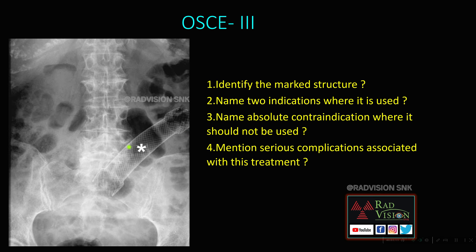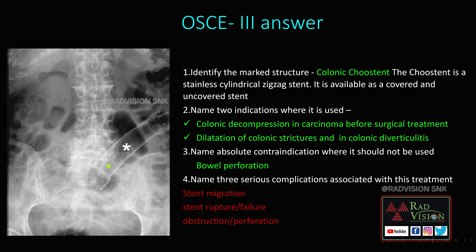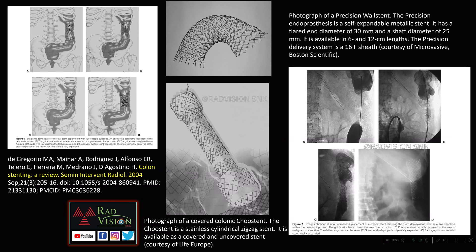The next case shows a marked structure — this is a colonic Chew stent, a stainless steel cylindrical zigzag stent available as covered or non-covered. Two indications are: colonic decompression in carcinoma before surgical treatment, and dilatation of colonic strictures. One absolute contraindication is bowel perforation. Three serious complications are stent migration, stent rupture or failure, obstruction, and perforation.